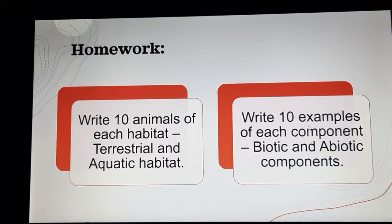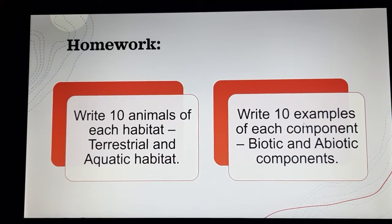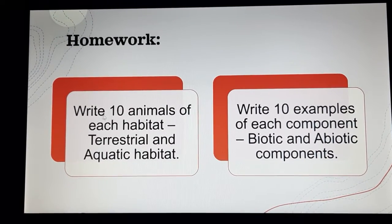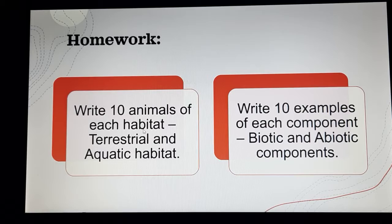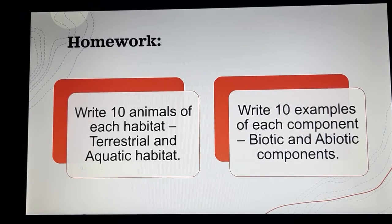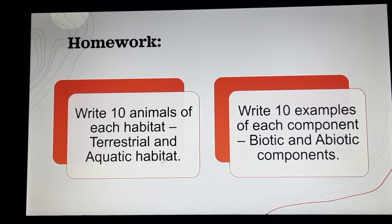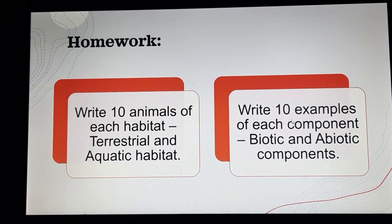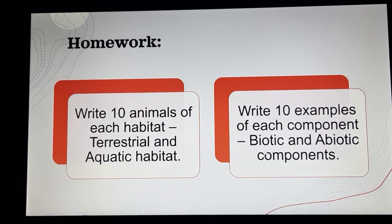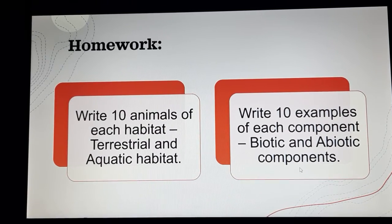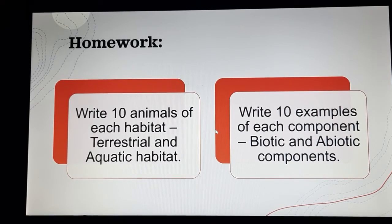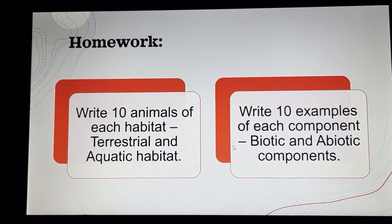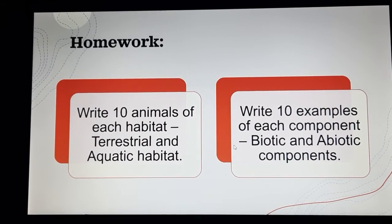Children, I hope you understood this. Your homework is to write 10 animals of each habitat — terrestrial and aquatic. And write 10 examples of each component such as biotic and abiotic components. Do your homework and we will meet again in the next class.